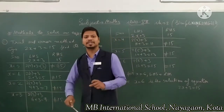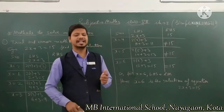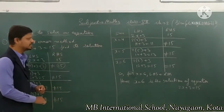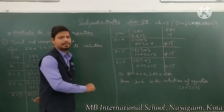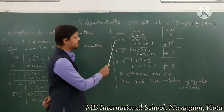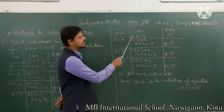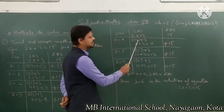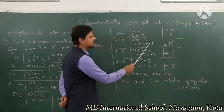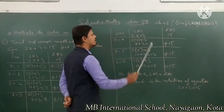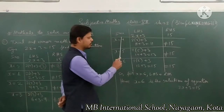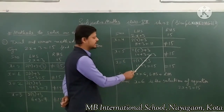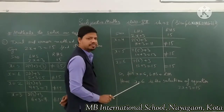We continue until LHS equals RHS. After x = 3, we try x = 4: 2 × 4 + 3 = 8 + 3 = 11. 11 is not equal to 15. Next, x = 5: 2 × 5 + 3 = 10 + 3 = 13. 13 is not equal to 15, so we proceed.